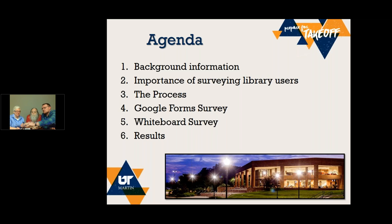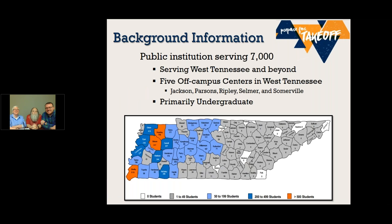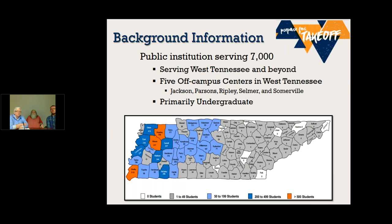We're giving you a little bit of background on UT Martin. We're not a huge institution. Although it says we're serving 7,000, I think our FTE is probably around 6,000, a little over 6,000. We also have five satellite campuses. Basically our institution serves the West Tennessee area. We have a lot of first-generation students coming to UT Martin, so I think we serve a unique population.